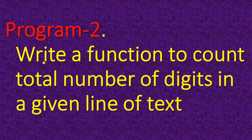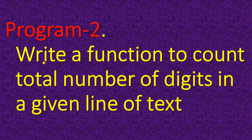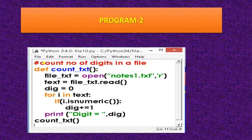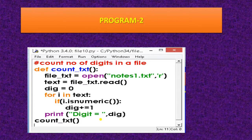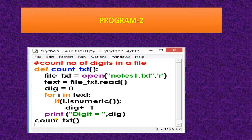The second program is to write a function to count the total number of digits in a given line of text. The function name is count_txt. The file is opened in read mode, and the text variable holds the content of the file. The initial value of dig is 0. Using a for loop for iteration, I am using the isnumeric() function — if i.isnumeric() is true, then dig += 1, incrementing the digit count. At last, you will print dig.